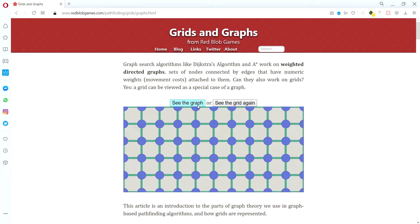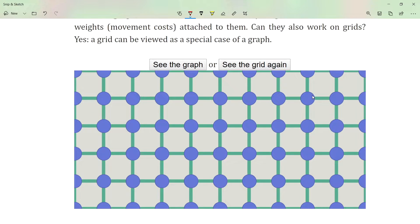Now if we click on this See the Graph button, we can see that the grid is nothing more than a graph. So those blue circles are vertices, and those represent our spaces. We can store data about the space, so what is placed in this vertex.